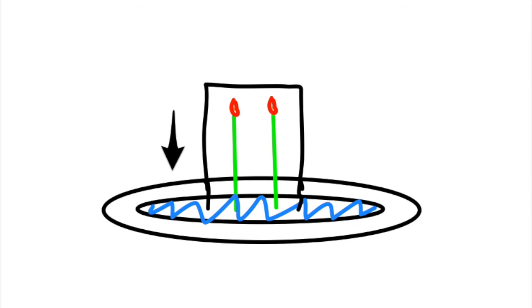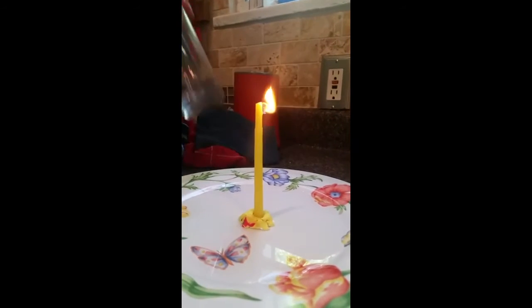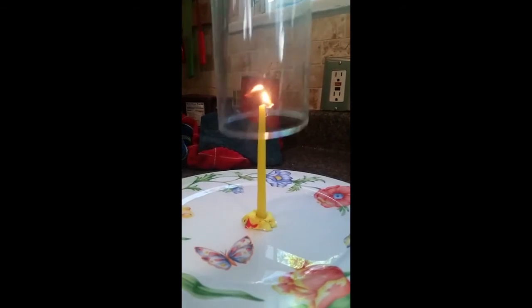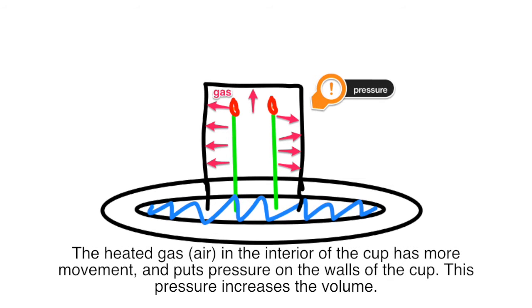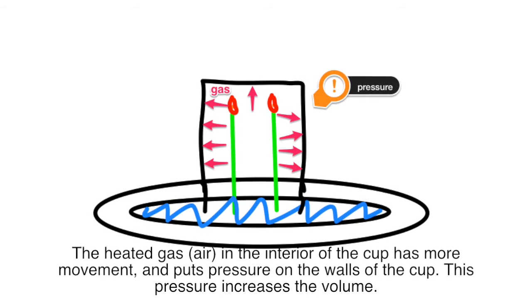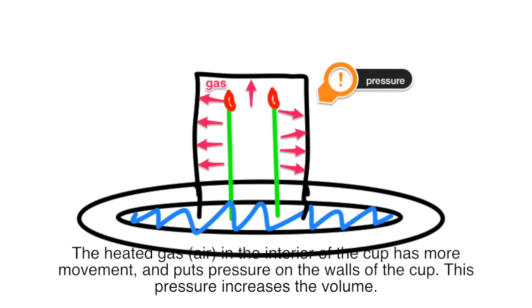Step 1: Place the cup on top of the candles. The heat from the flame has increased the temperature in the cup. If we apply Charles' Law, the increase in temperature will result in an increase in volume in the interior of the cup. The heated gas air in the interior of the cup has more movement and puts pressure on the walls of the cup. This pressure increases the volume.